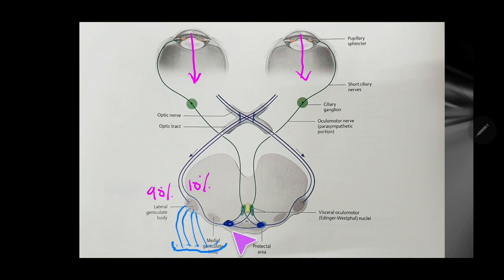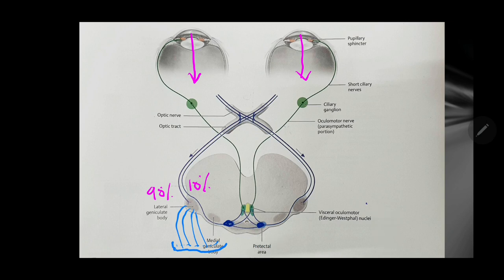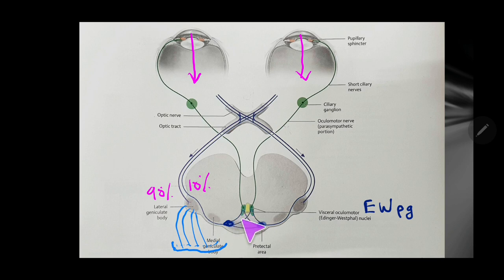These are the third neurons which reach the pre-tectal nucleus. From the pre-tectal nucleus, the fourth neurons emerge out and actually innervate — or reach — the Edinger-Westphal nucleus on both sides, since they are paired. This nucleus is also called the Edinger-Westphal-PG, the accessory oculomotor nerve nucleus, or the visceromotor nucleus — different names for the same nucleus. Up to reaching the Edinger-Westphal nucleus, that is the afferent limb.